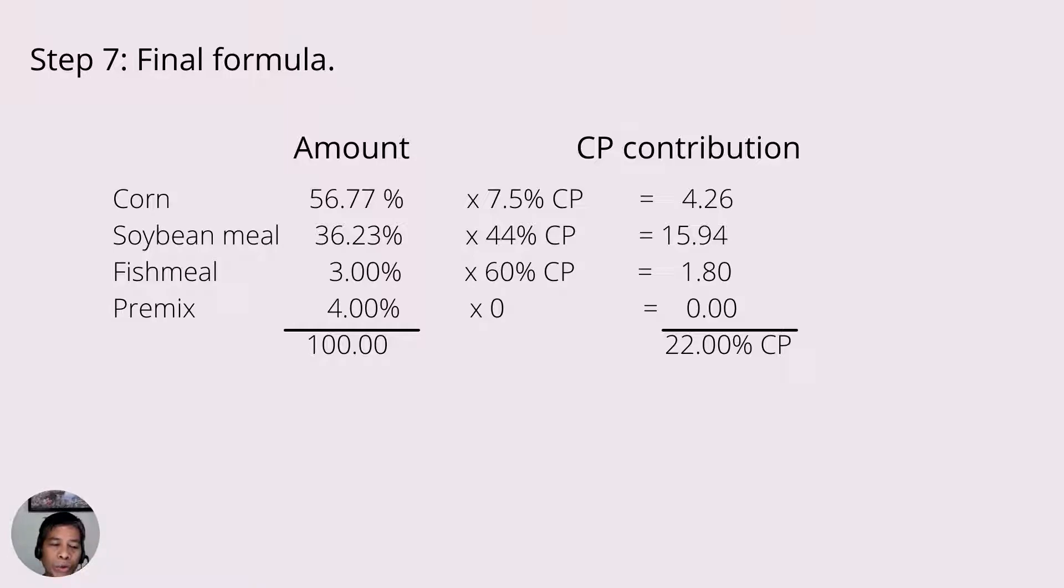So corn, 56.77%, multiply it with 7.5% CP would give you 4.26% CP. Do the same for all the ingredients and sum it up, you will get 22% CP.